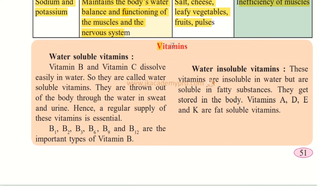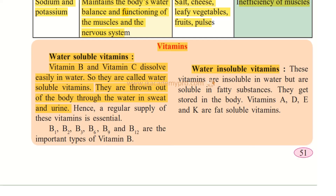Now let's learn about vitamins. There are two types: water-soluble vitamins, which can mix in water, and water-insoluble vitamins, which do not mix in water. Vitamin B and Vitamin C are water-soluble — they dissolve easily in water and are thrown out of the body through sweat and urine. Hence, a regular supply of these vitamins is essential.